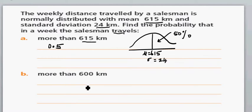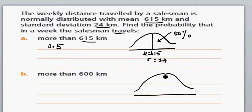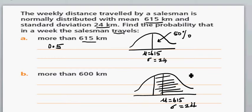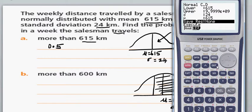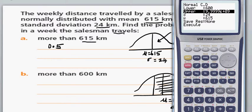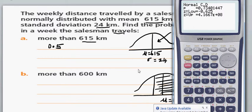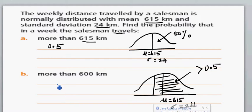The next question is: what is the probability that the salesman travels more than 600 kilometers? Draw a normal curve — mu is 615 and standard deviation is 24, so 600 would fall to the left of the mean. The area to the right of 600 will be greater than 0.5. Using the calculator, set lower to 600 and upper to a large number, and the answer is 0.7340.